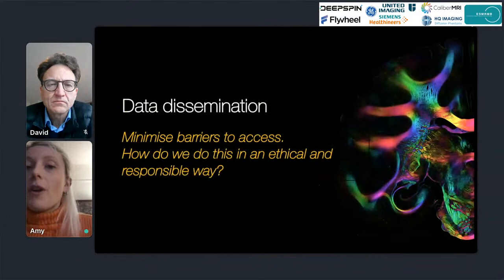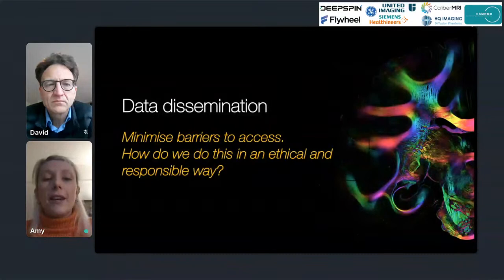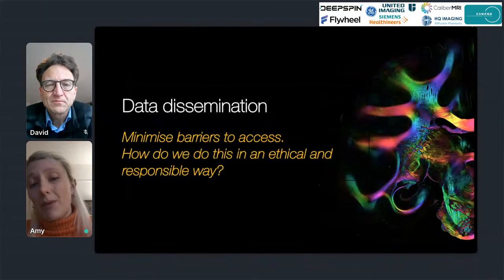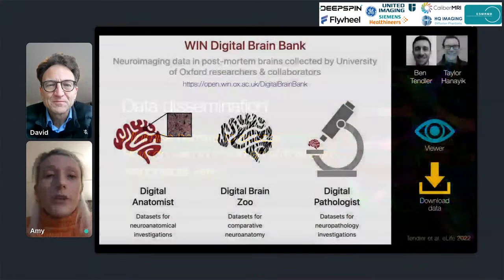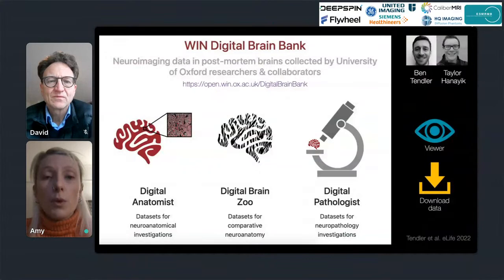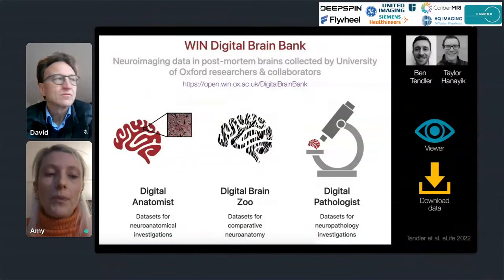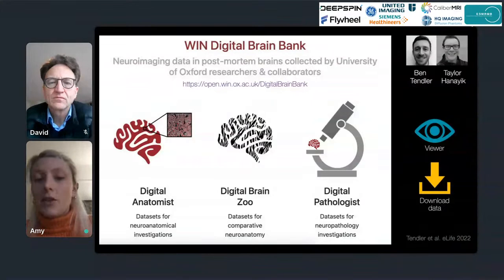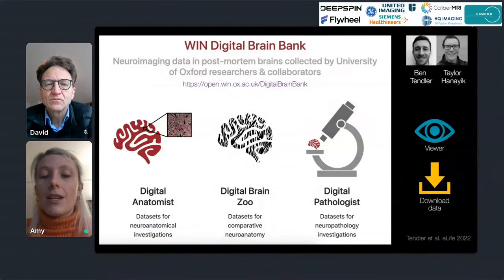The final part of my talk focuses on data dissemination — how we share our data. Our goals were to minimize barriers to access while doing so ethically and responsibly. The Big MAC data set is shared through our online portal called the WIN Digital Brain Bank, which hosts a whole series of different post-mortem data sets acquired by our group over the past ten or so years — the Digital Anatomist, Digital Brain Zoo for comparative neuroanatomy across many animals, and the Digital Pathologist with pathological and control post-mortem human brains.